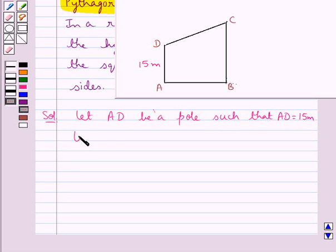Then let BC be a pole such that BC is equal to 20 meters. So this pole BC is of height 20 meters.